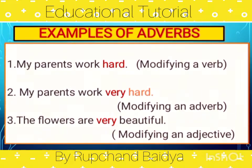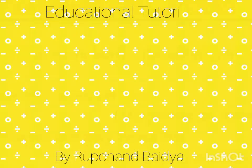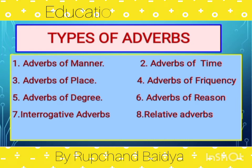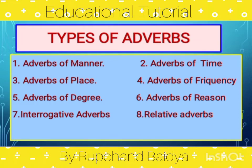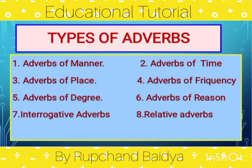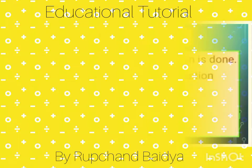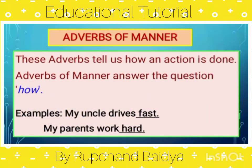So we know an adverb modifies three things: a verb, an adverb, and an adjective. Now let us learn the different types of adverbs in detail. We have adverbs of manner, adverbs of time, adverbs of place, adverbs of frequency, adverbs of degree, adverbs of reason, interrogative adverbs, and relative adverbs.